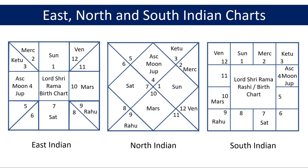There could be a lot of information in these charts, such as houses, zodiac signs or Rashis, ascendant or lagna, and planets or grahas and their degrees, and various other reference points such as Arudapadas etc. You can see some of this information shown in the charts on the screen.